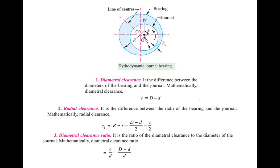The next term is radial clearance. It is the difference between the radii of the bearing and the journal. Mathematically, it is given by c1, which is equal to capital R minus small r, where capital R is the radius of the bearing and small r is the radius of the journal. This can be written as (capital D minus small d) divided by 2, so c1 is equal to c by 2.